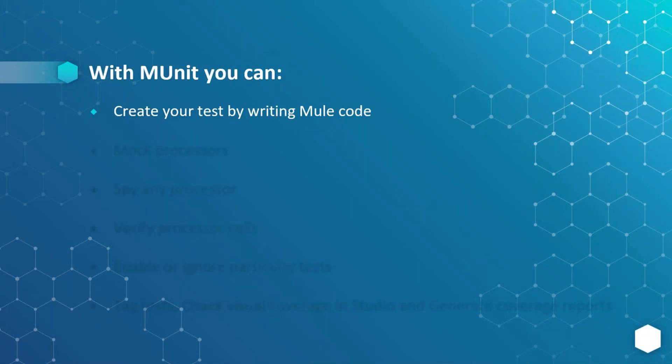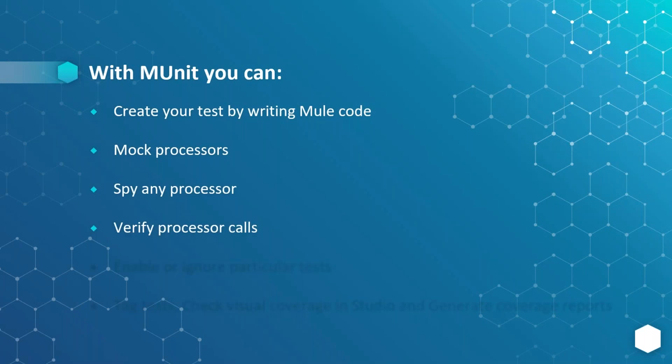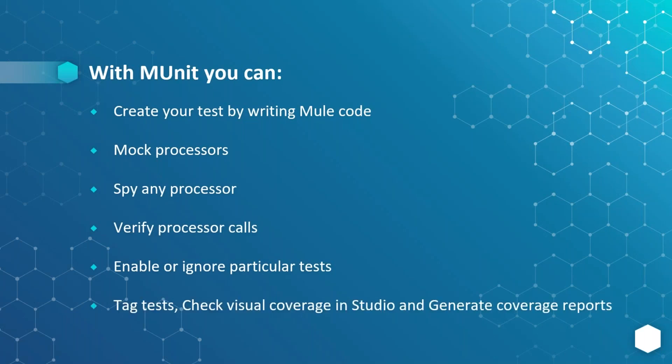What can we do with MUnit? We can create test cases by writing Mule code. We can mark processors — we already know we have event source and event processor; the event processors can be marked. We can spy any processor, verify processor calls, enable or ignore particular tests if required, and tag tests. We can check visual coverage in the studio: how many test cases succeeded, how many failed, and what percentage of unit test cases have succeeded. We can also generate coverage reports.